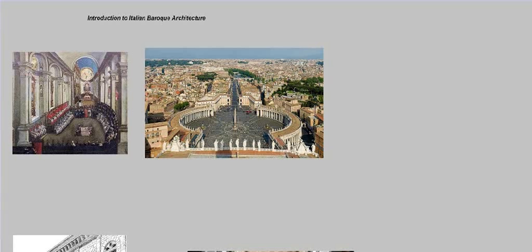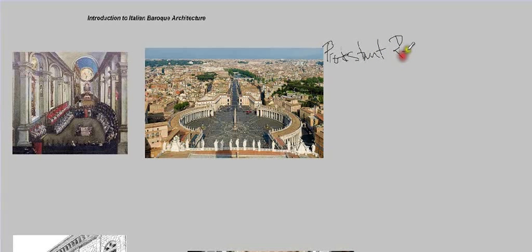Since we've already been studying the Baroque in Italy in this course, you should already know the major issues of the period. But let's review the main conflict that's driving the art of Baroque Italy, and that is the Protestant Reformation of Northern Europe and the response of the Catholic Church, which is the Counter-Reformation.